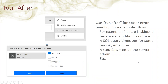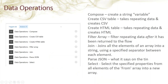Moving on to the various data operations — since the last time I looked at Flow, they had added several useful things. I believe create CSV table, create HTML table, join, and select weren't there before. All that existed was compose, filter array, and parse JSON.